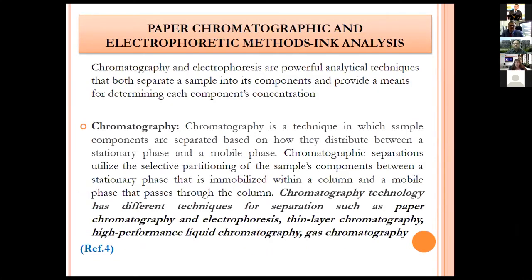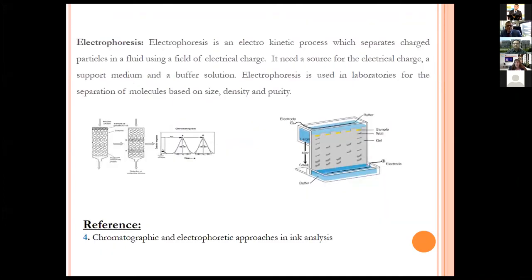Paper chromatography and electrophoretic methods are used in ink analysis. Chromatography separates sample components based on distribution between a stationary phase and a mobile phase. Techniques include paper chromatography and electrophoresis, thin layer chromatography, HPTLC, and gas chromatography. Electrophoresis is an electrokinetic process separating charged particles in a fluid using an electrical charge field, used in laboratories for separation of molecules based on size, density and purity. These chromatographic and electrophoretic techniques have been widely used in ink analysis.